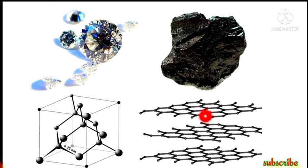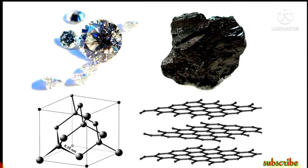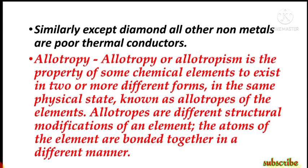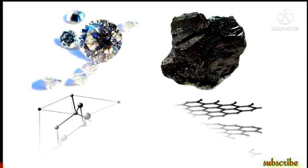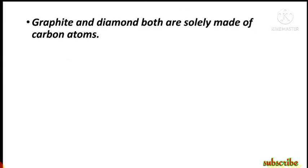Due to their different arrangements, the physical properties of diamond and graphite are totally different, even though both are solid at room temperature and both are chemically carbon. Oxygen also exists in two allotropic forms: O₂ (oxygen) and O₃ (ozone) — both are allotropes of each other and have different properties. Allotropism is the property of a chemical element to exist in two or more different forms with the same chemical properties but different physical appearances.